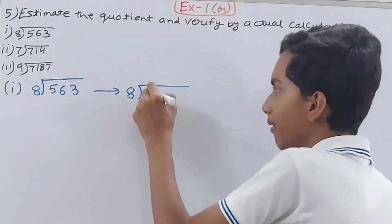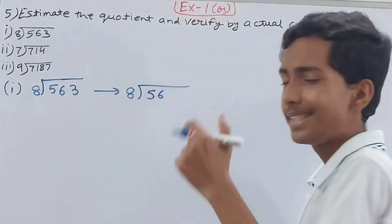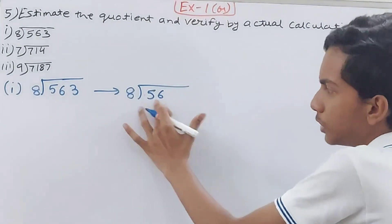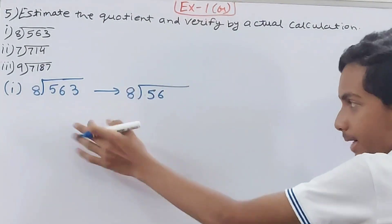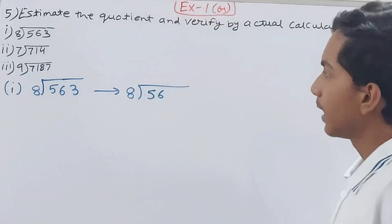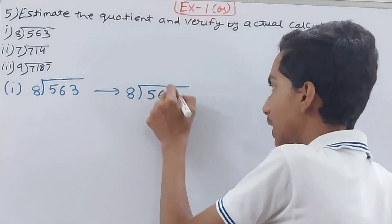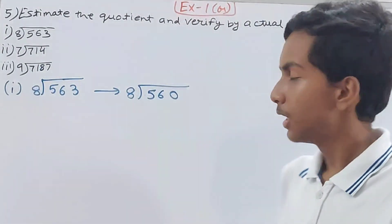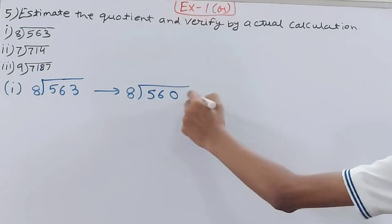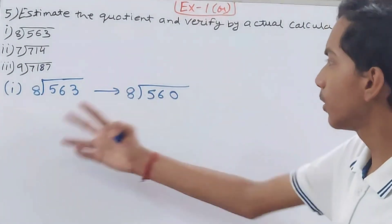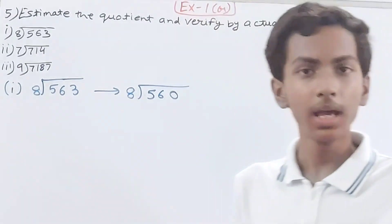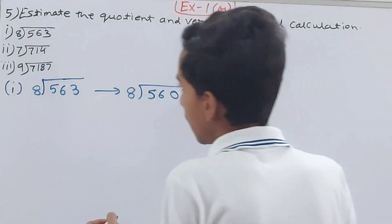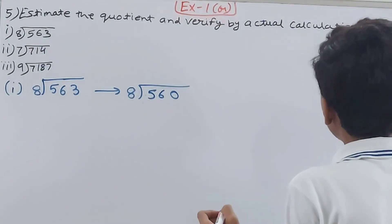We can write 560, since 8 into 7 is 56. This is divisible. Since 63 is there, if we get rid of 63 and put 0, that's fine because we are doing estimation — rounding to the nearest tens place. We have to solve both estimated and actual quotient and verify them.